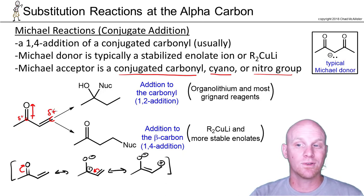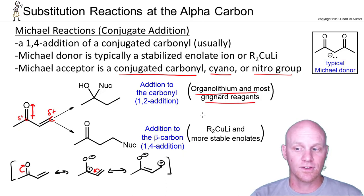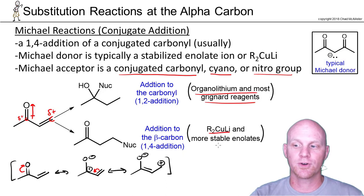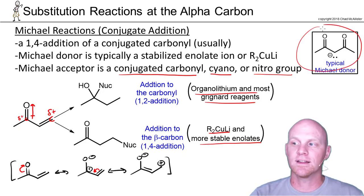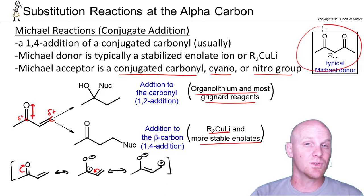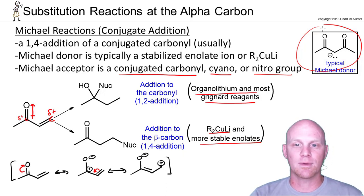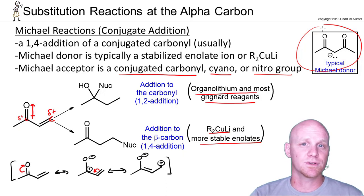Stronger nucleophiles like organolithiums and Grignards tend to do 1,2 addition — they attack the carbonyl. Whereas weaker, more stable nucleophiles like lithium dialkylcuprates, and stabilized enolates, tend to do 1,4 addition. A stabilized enolate — where the enolate is stabilized by two additional resonance structures, meaning it's alpha to two carbonyls — is the most common example of these Michael donors, the nucleophiles involved.